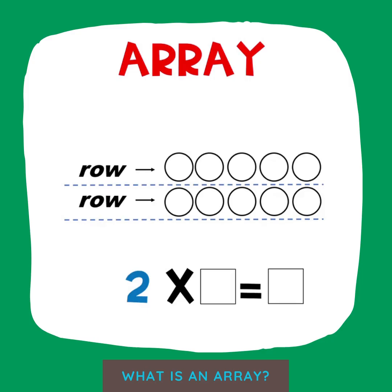This array has two rows. Notice in the multiplication equation, the first number is the number of rows, or the number of groups.